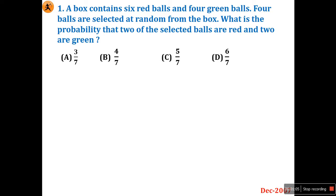Question number one: a box contains six red balls and four green balls. Four balls are selected at random from the box. What is the probability that two of the selected balls are red and two are green? So total ten balls, and we are selecting four balls from them.